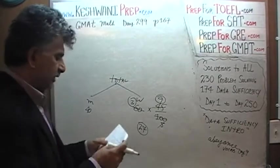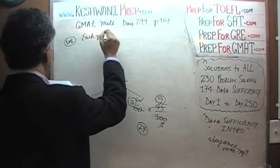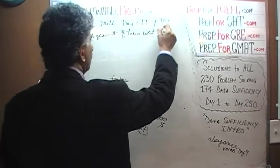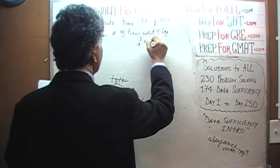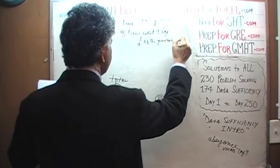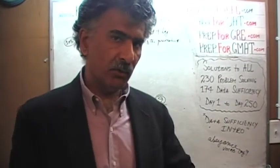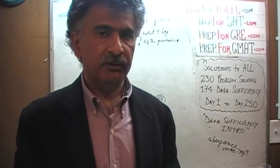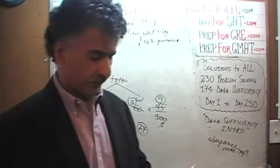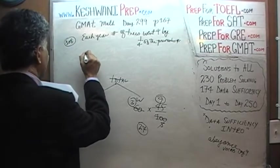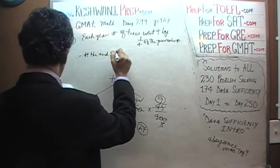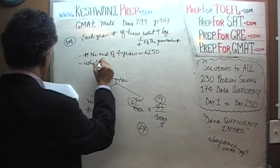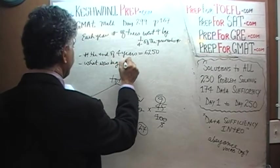In problem 108 we are told that each year, the number of trees went up by a quarter of the previous number. Each year, the number of trees that we had in the orchard went up by one quarter more than what it was the previous year. So if the previous year we had 100 trees, the following year we have 125 trees. If we had 400 trees the previous year, the next year we'll have 500 trees. Whatever it was, it goes up by one quarter every year. And we are further told that at the end of four years, we have 6250 trees. The question is very straightforward: what was the beginning number?